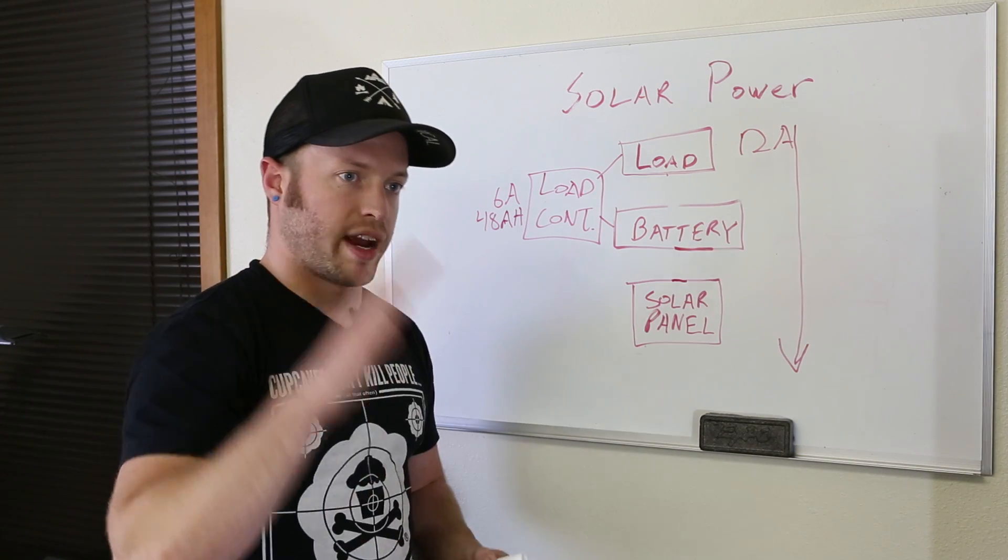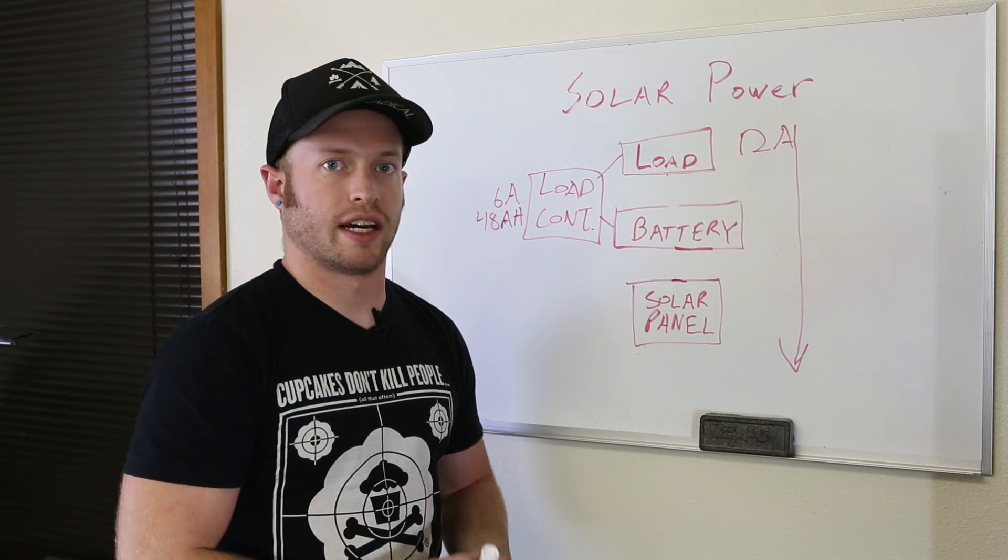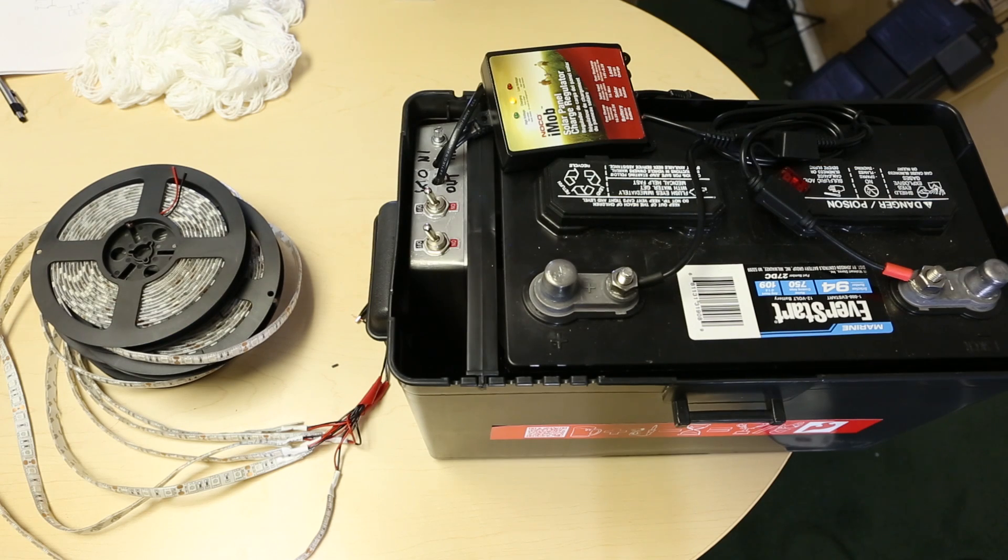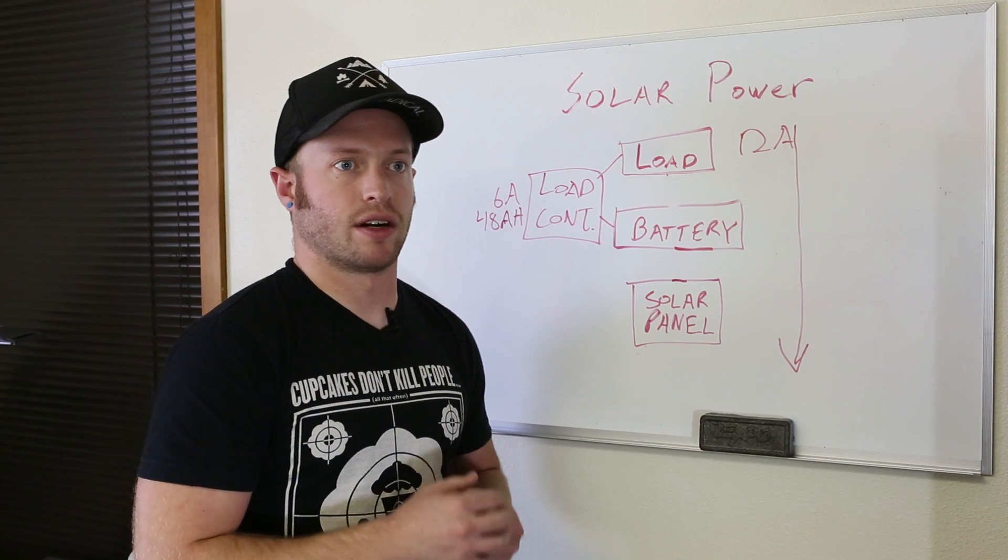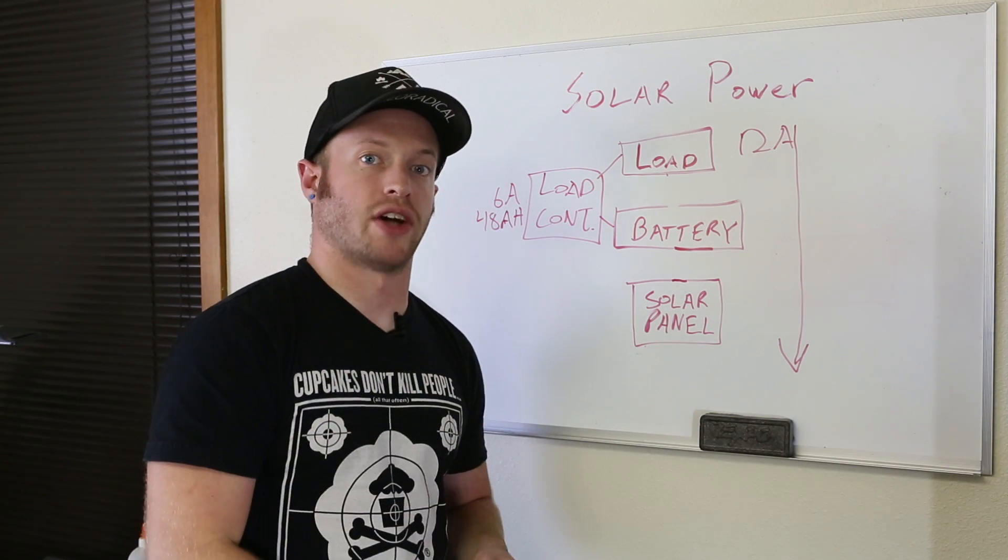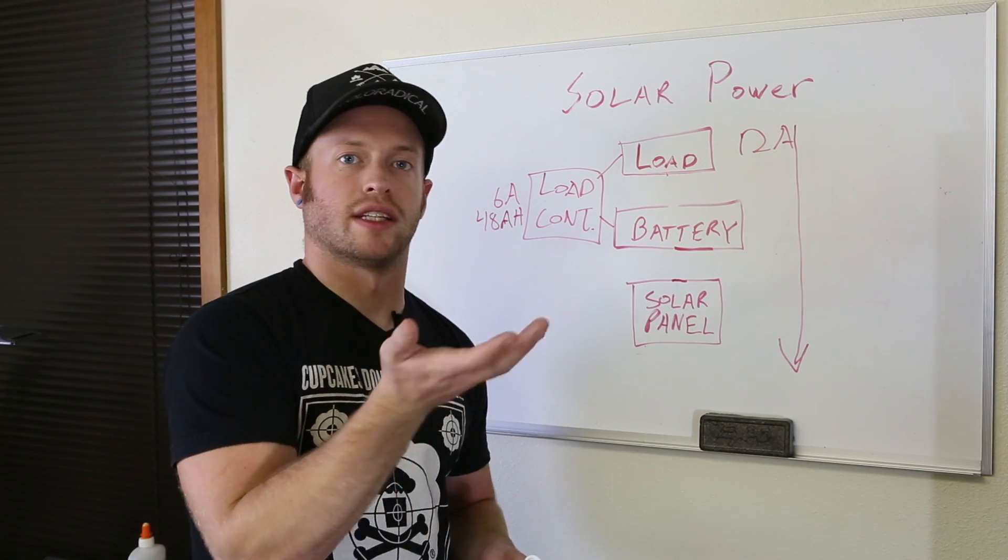So those are not designed to be drained deeply. They're not designed to run out of energy and then come back up. To replace that, I bought a deep cycle battery, which is a boat battery. Deep cycle batteries are designed to deliver a lot of current for a long time and then recharge slowly at the same rate.